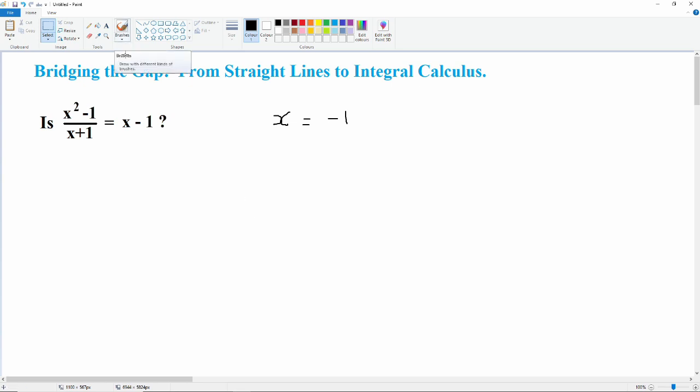So the left-hand side is not equal to the right-hand side. If we want to make the left-hand side equal to the right-hand side, we must stipulate that x is not equal to minus 1.